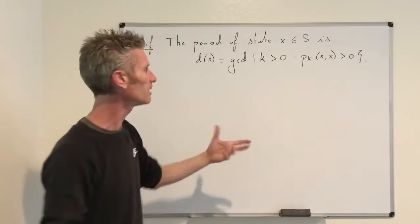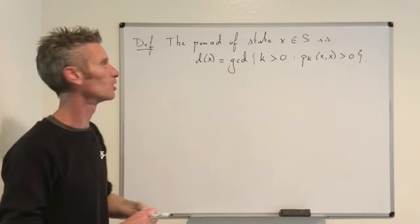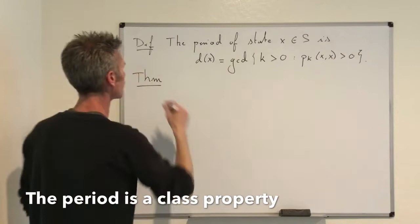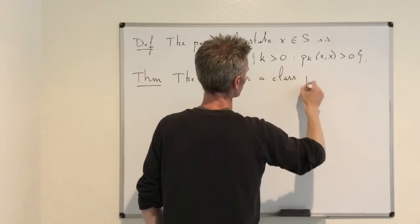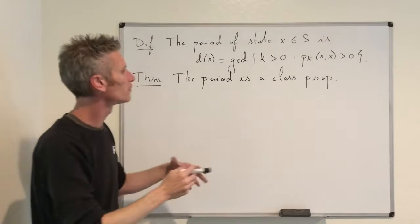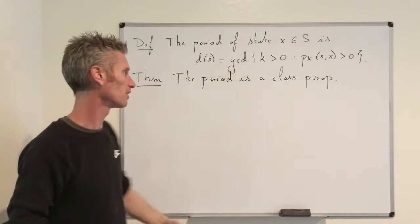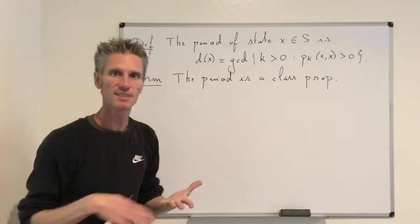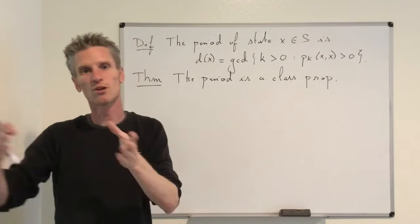That defines the notion of period. The main first result about the period is that the period is a class property — exactly the same idea as for recurrence, transience, positive recurrence, and null recurrence. This means that if two states are in the same communication class, then they must have the same period. This also means that if the process x_n is irreducible — meaning there is only one communication class — then all states must have the same period, and we talk about the period of the Markov chain itself.